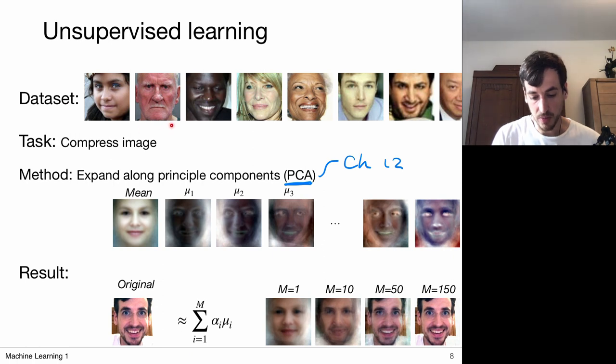For example, some look a bit more grumpy and not really smiling a lot. Some are smiling a lot. And so these are variations in the data and these principal components capture these variations in the data.